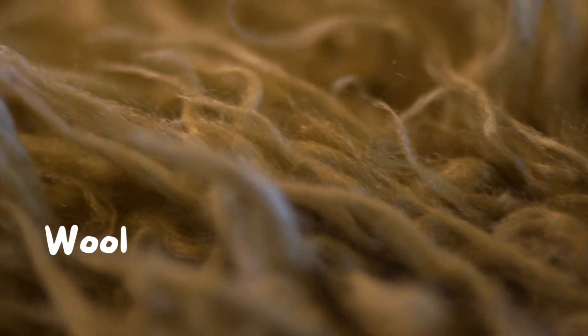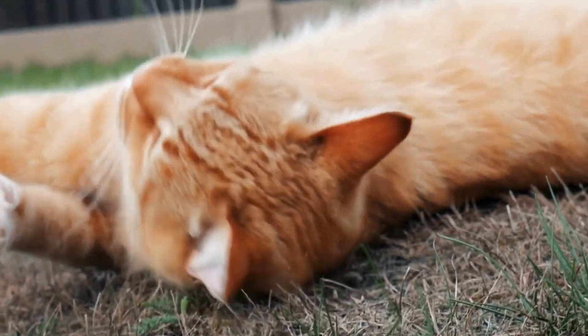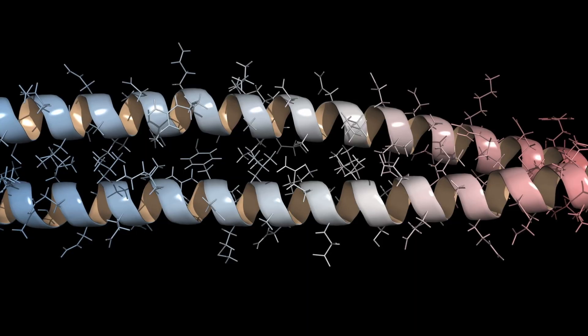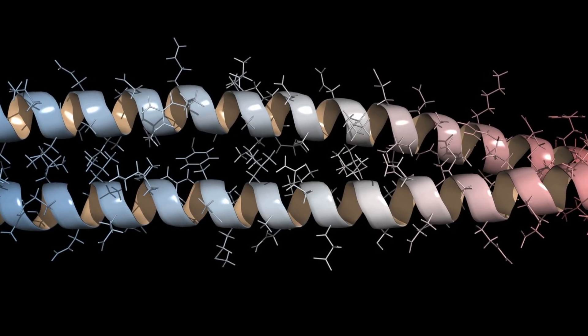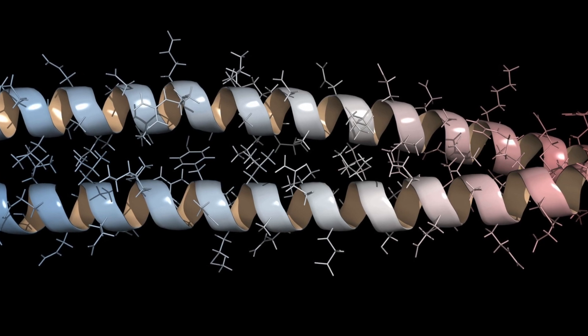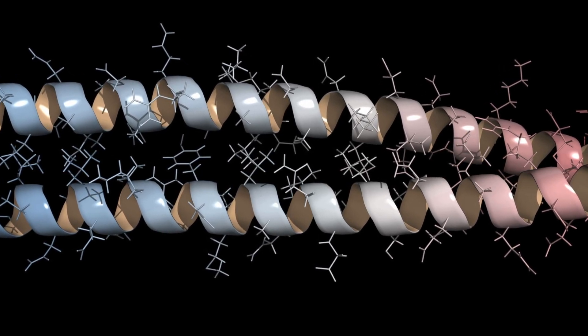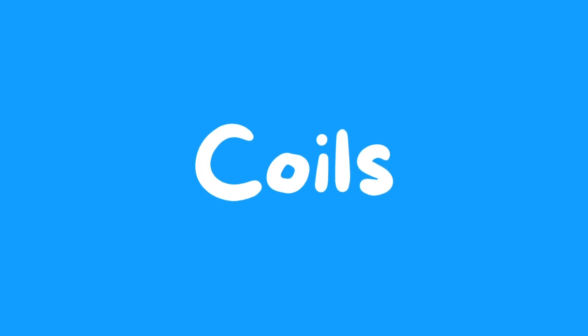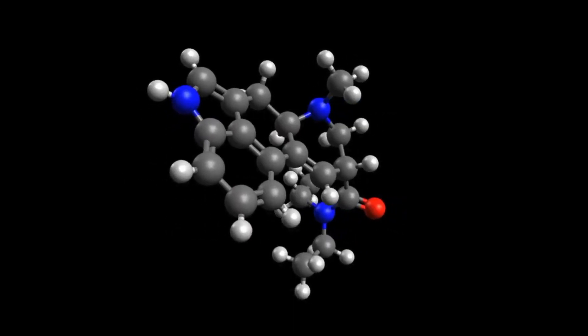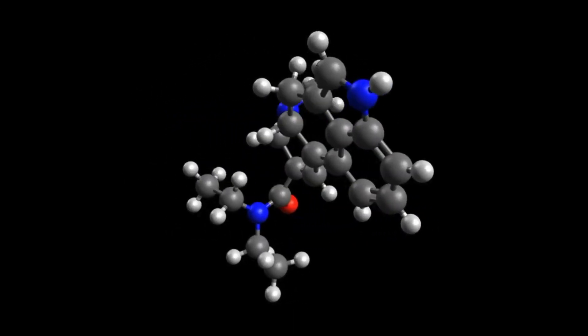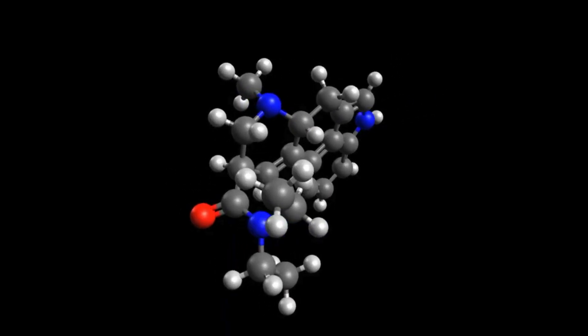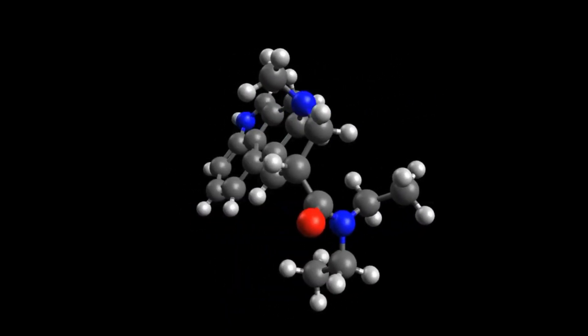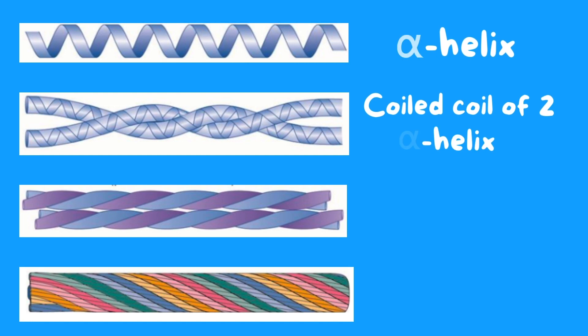We can start from wool. Wool is mainly made up of alpha-keratin, a very resistant fibrous protein also present in hair, nails, and animal fur. Its resistance is given by the secondary structure, composed almost exclusively of alpha-helices twisted to form dimers called coiled coils. The amino acids that make up the keratin are largely those with hydrophobic side chains, to favor the twisting and, therefore, the alpha-helical secondary structure.